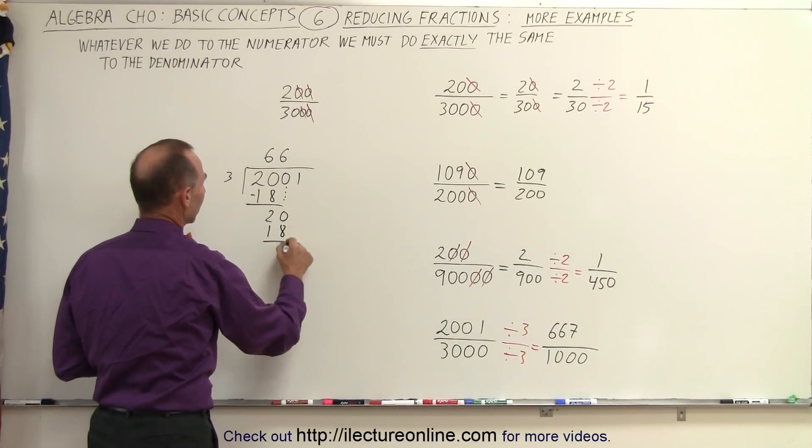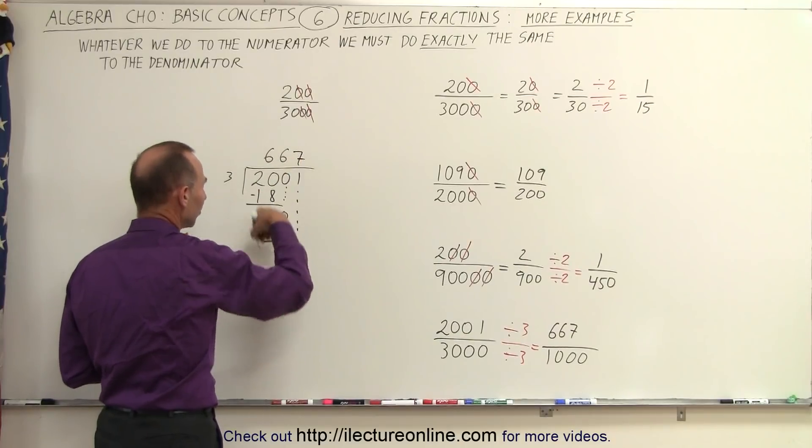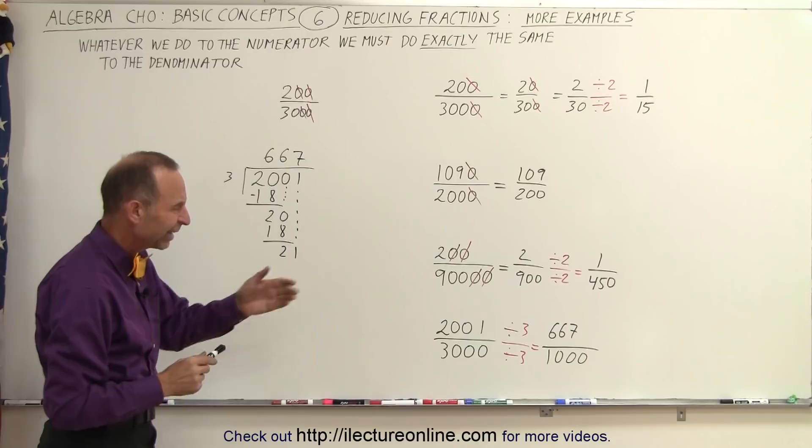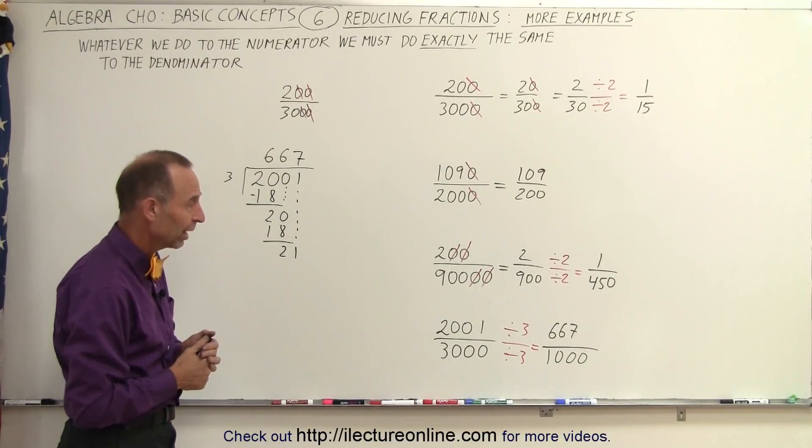Remainder is 2. Drop down to 1. 3 goes into 21, 7 times. So you can see that it doesn't take very long to do it quickly on the side, in case you're not sure how to do that in your head. So you can do that as well.